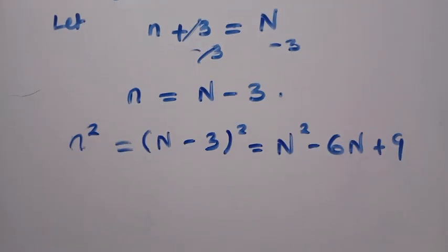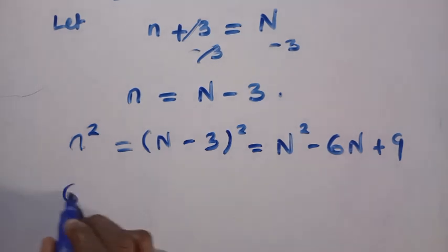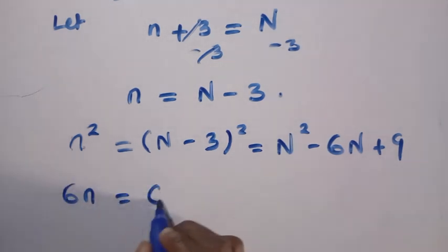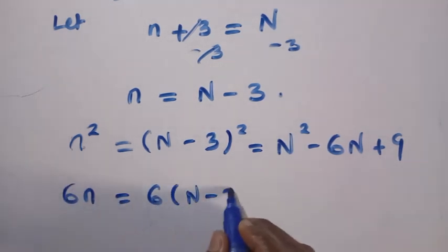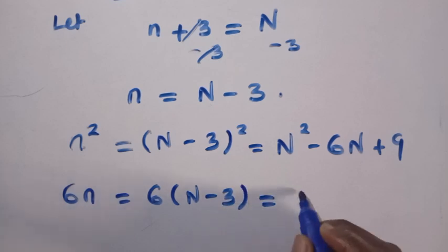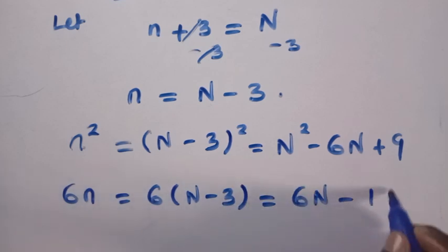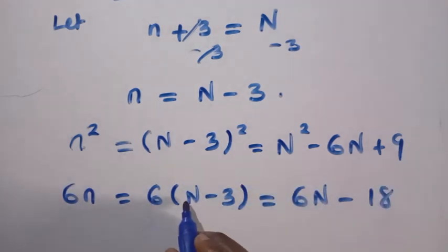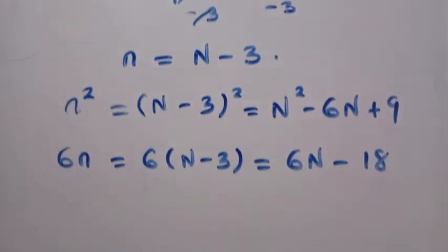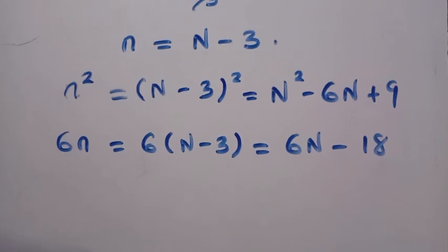And also from what we have at the right hand side, we have 6n, which when we multiply 6 by (N - 3), we are going to get 6N - 18. 6 times N is 6N, then 6 times -3, we have it as -18. And we have the constant term there, which is 9.